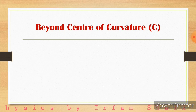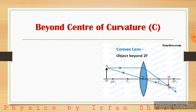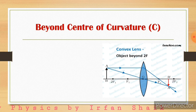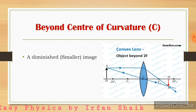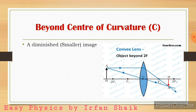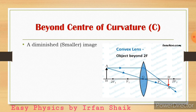Second case: when object is placed beyond the center of curvature C, or 2F. Here you can observe the ray diagram — AB indicates the object and you can find the image on the other side of the convex lens. AB is the object and A'B' indicates the image. We can clearly find out that the image is formed smaller than the object.